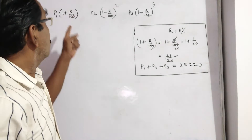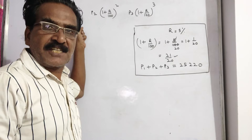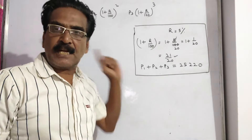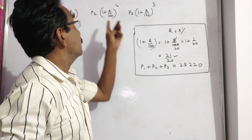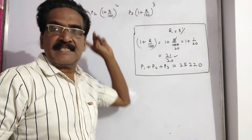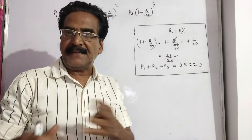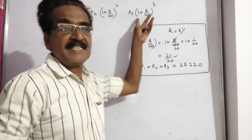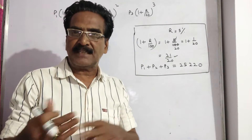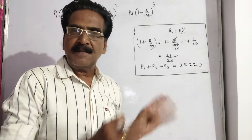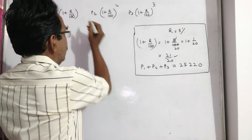This is the first installment, that is the installment paid after one year. This is the second installment, that is the installment paid after two years. This is the third installment, that is the installment paid after three years. All these three installments are equal.